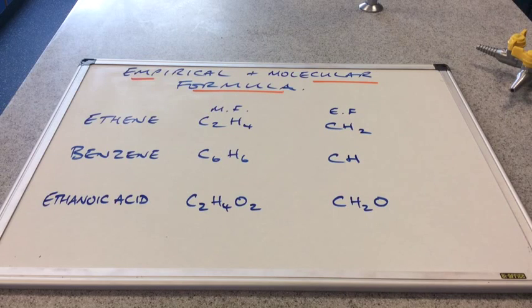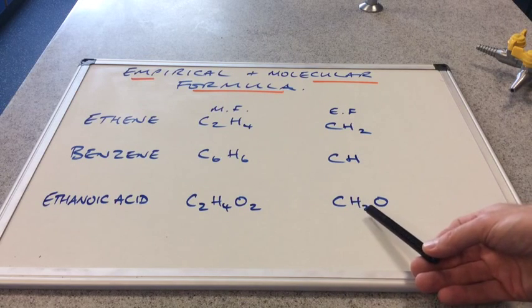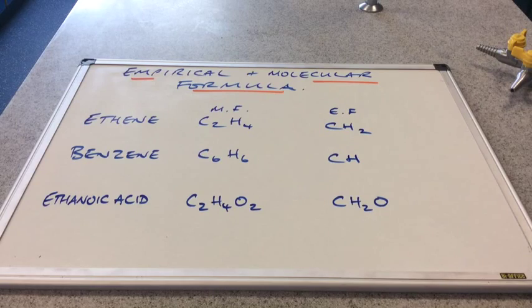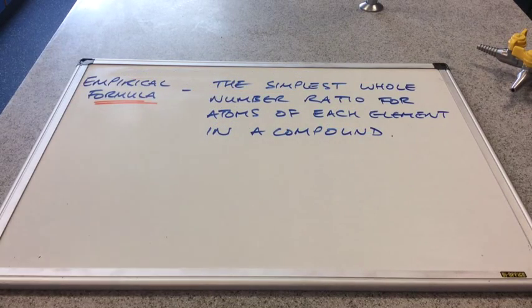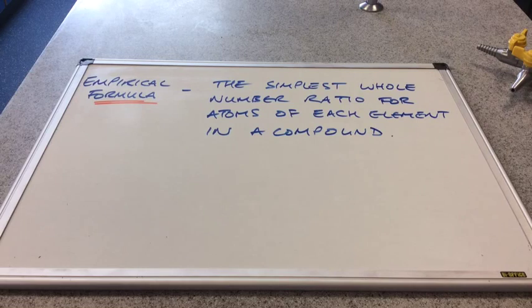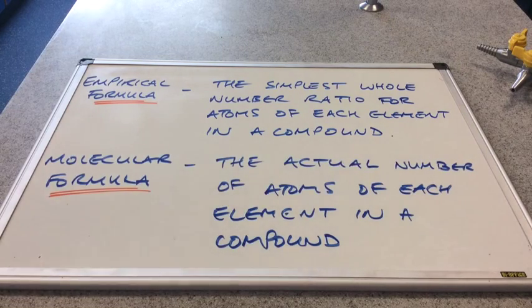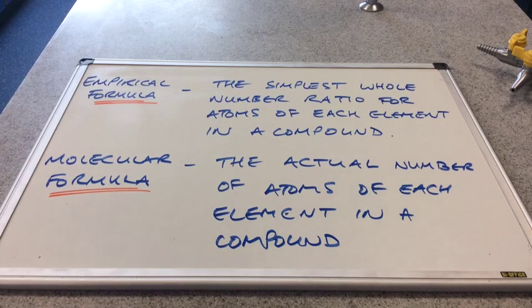And in ethanoic acid, for every carbon, there's two hydrogens and an oxygen. So the empirical formula is defined as the simplest whole number ratio for the atoms of each element in a compound. And the molecular formula is simply the actual number of atoms of each element in a compound.